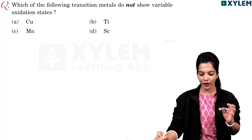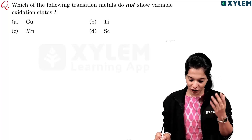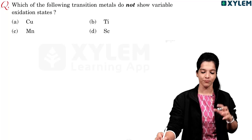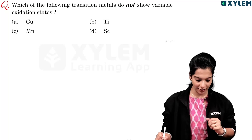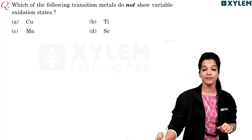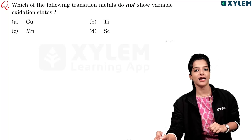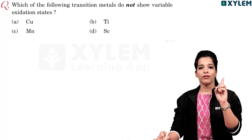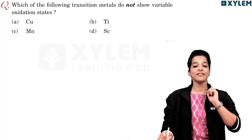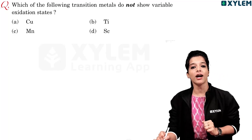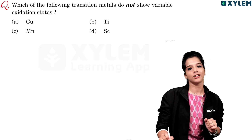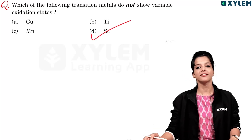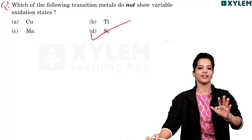Which of the following transition metals do not show variable oxidation state? The options are: copper, manganese, titanium, and scandium. Scandium shows only one oxidation state, so option D, scandium, is the correct answer.